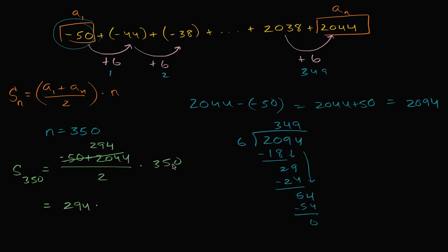So this is going to be 1994 times 350 divided by 2 is 175. So this is going to be 1994 times 175.